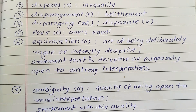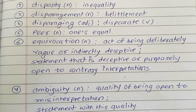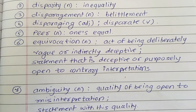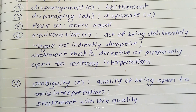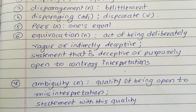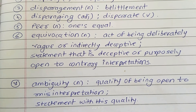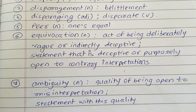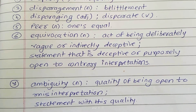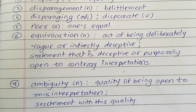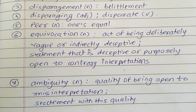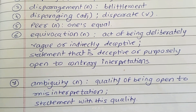My next word is equivocation, meaning the act of being deliberately vague, or an indirectly deceptive statement that is purposely open to contrary interpretations. My next word is ambiguity, meaning the quality of being open to misinterpretation, or a statement with that quality.